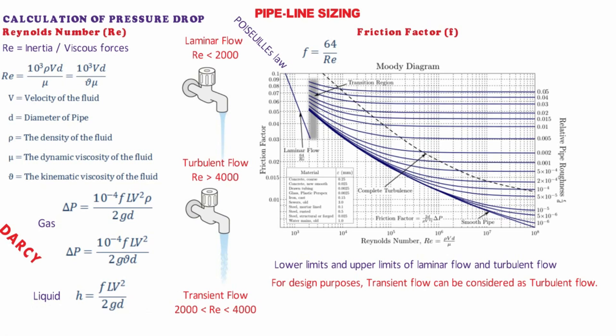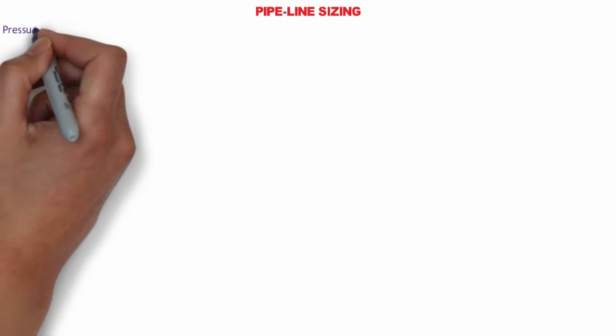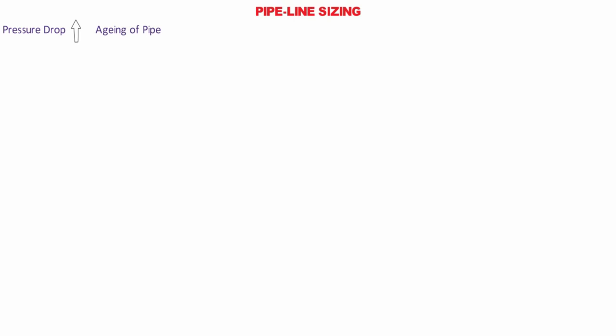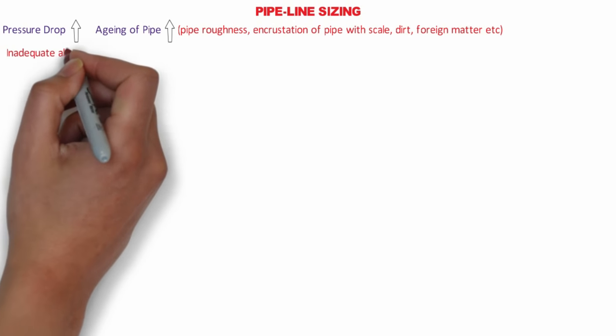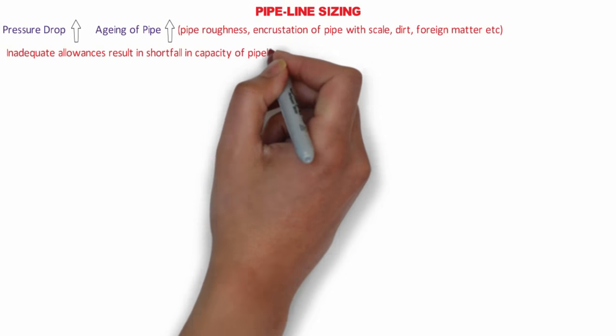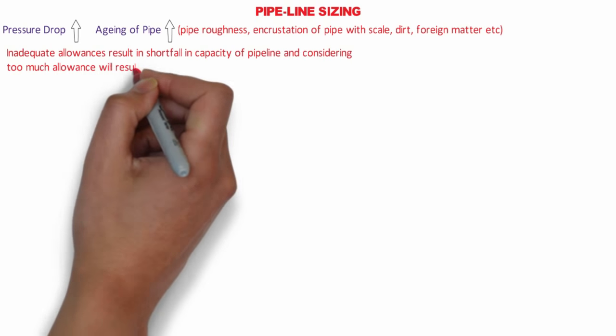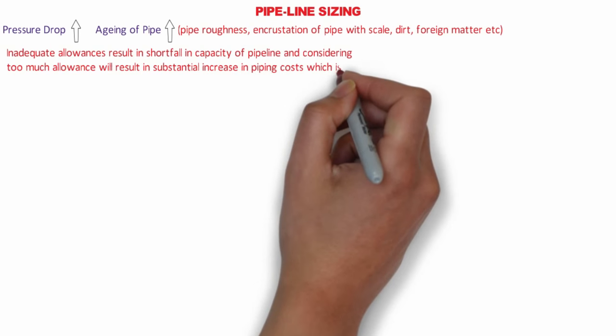Since we have learned about pressure drop, let's go back to our original topic of line size calculation. While sizing pipelines for water services, the likely increase in pressure drop with the aging of the pipe — due to increased pipe roughness, encrustations with scale, dirt, and foreign matter — should also be considered. It is difficult to identify this increase accurately, but we need to consider an optimum value, as it will have adverse effects otherwise. Inadequate allowances result in shortfall in pipeline capacity, while too much allowance will result in a substantial increase in piping cost, which is undesirable.